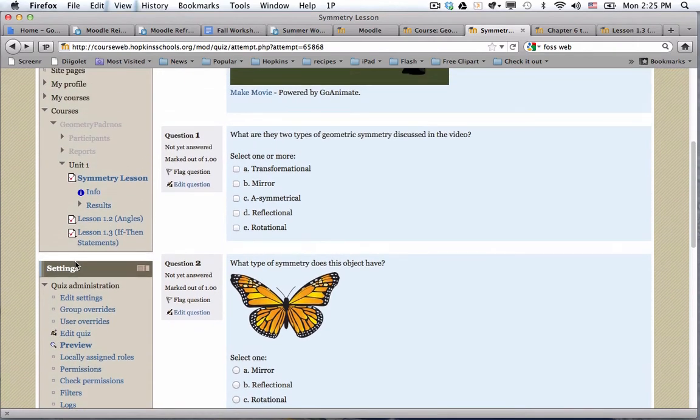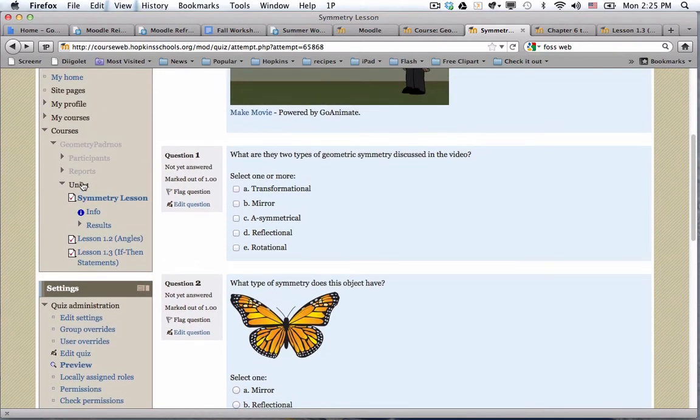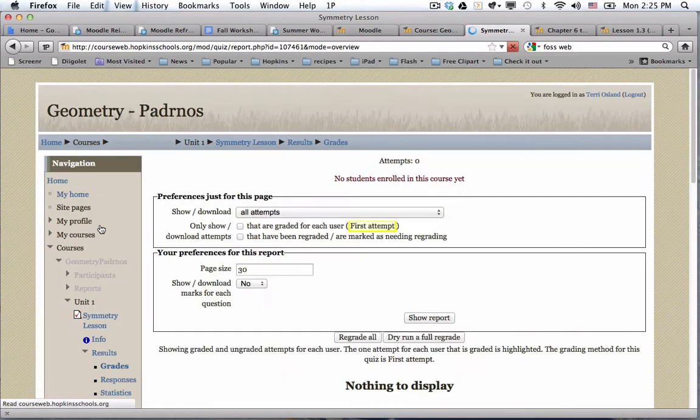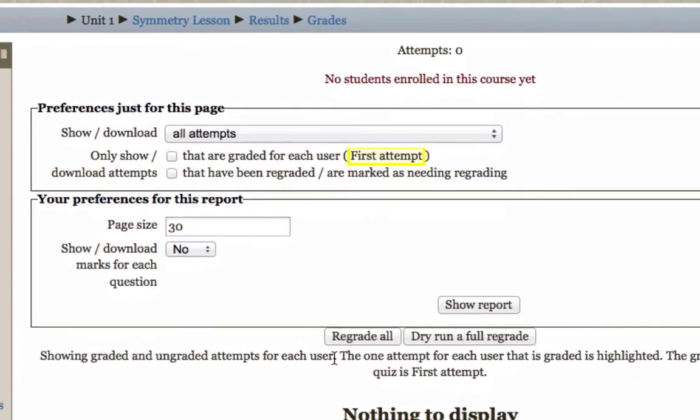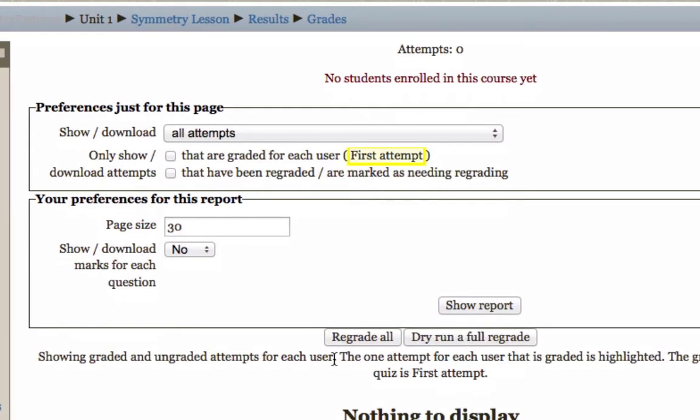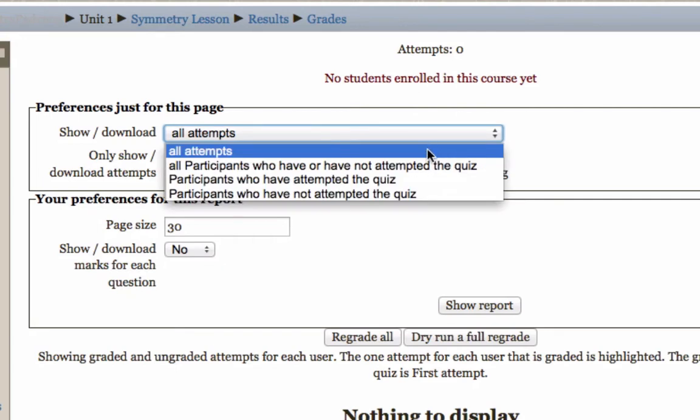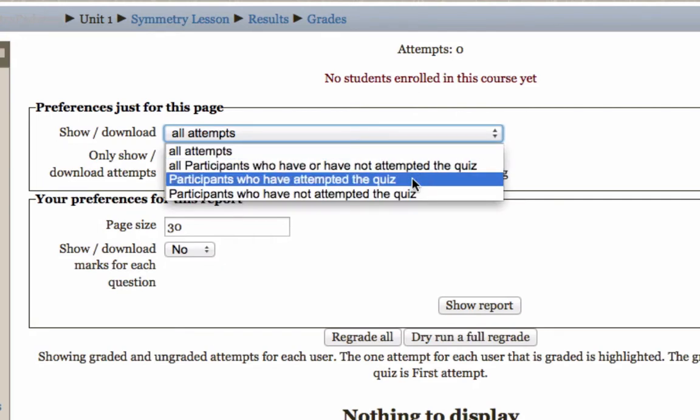Then under the unit and the specific piece of content, there is what's called the results tab or link. And in there you would be able to see if anybody had taken this quiz. You would be able to see their attempts and you could filter it, which is actually a great option. You could filter it to see just the participants who have or have not attempted this quiz.